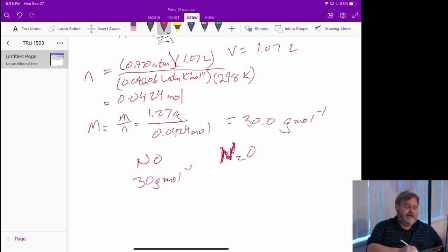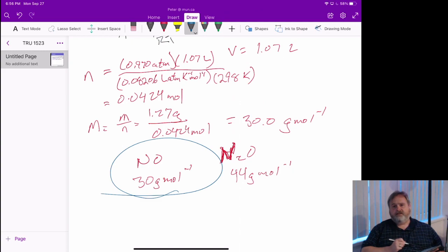Here, we're going to be 44 grams per mole, because we've got an extra nitrogen in there. So, it appears that our unknown gas is nitric oxide.